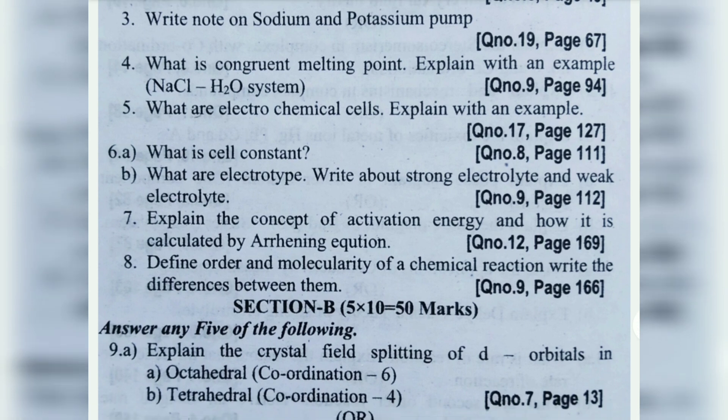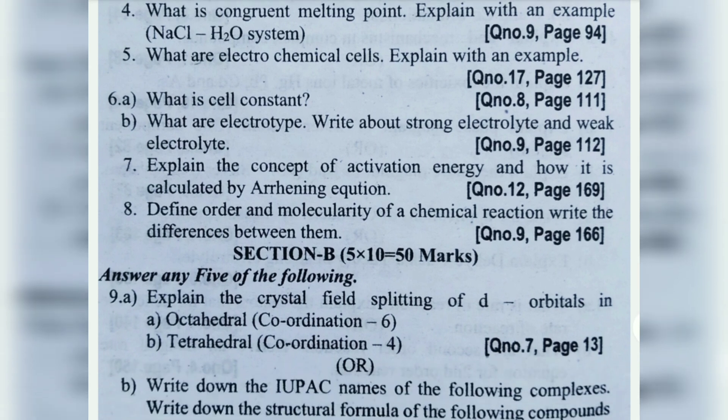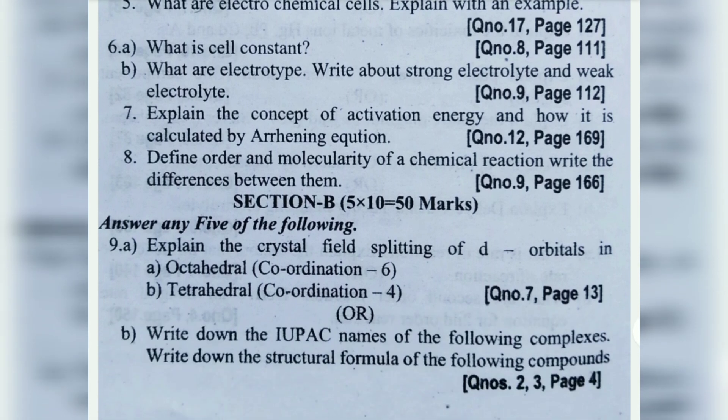Seventh one: Explain the concept of activation energy and how it is calculated by the Arrhenius equation. Eighth one: Define order and molecularity of a chemical reaction and write differences between them. These are the shorts for Model Paper 3.